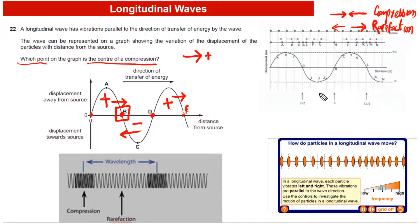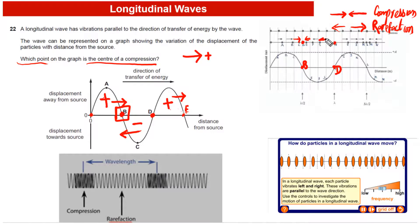Looking at this diagram I've drawn, at point B the particles on either side are moving towards each other, confirming it is the center of compression. At point D, one particle is moving to the left and the other is moving to the right, so this is the center of rarefaction.